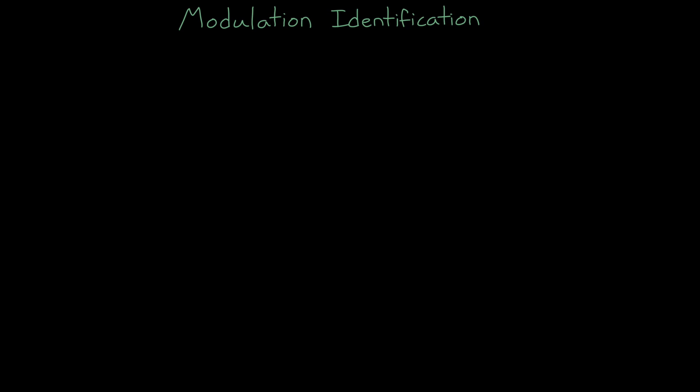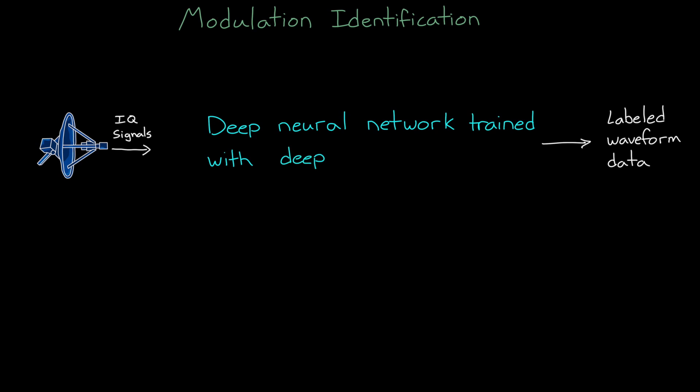This is what is meant by modulation identification or waveform identification. We have this need for a function or a set of functions that take in raw IQ signals from the antenna and label the waveform and its parameters. So you can start to see how this is shaping up to be a deep learning problem, where we could learn this classification model using labeled waveform data.